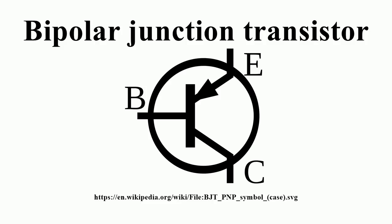Most of the current is carried by electrons moving from emitter to collector as minority carriers in the P-type base region, to allow for greater current and faster operation. Most bipolar transistors used today are NPN because electron mobility is higher than hole mobility. A mnemonic device for the NPN transistor symbol is 'not pointing in', based on the arrows in the symbol and the letters in the name.